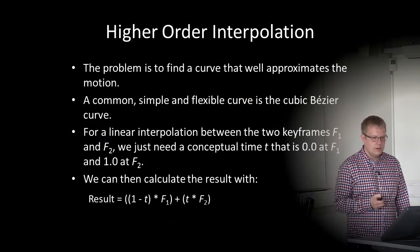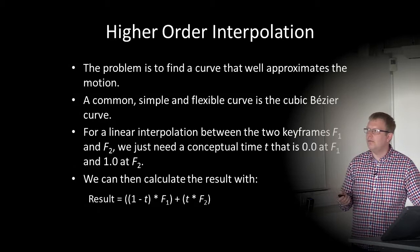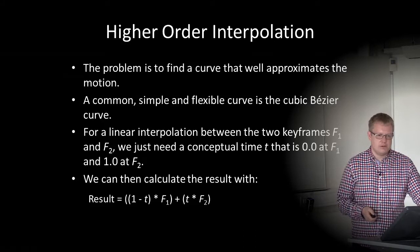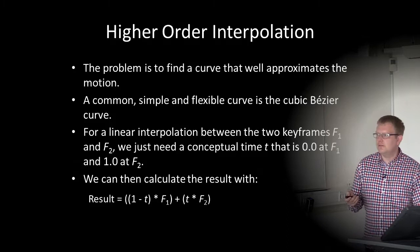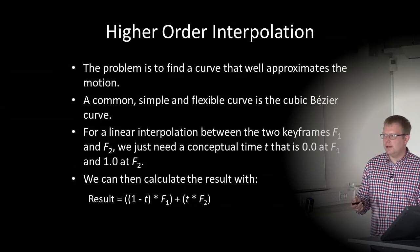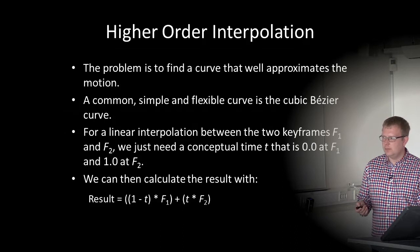If we use higher-order interpolation between keyframes where we define some curve, the animation looks more natural and only requires three keyframes instead of six, producing better results. A common, simple, and very flexible curve is the cubic Bézier curve. For a linear interpolation between two keyframes F1 and F2, we use a conceptual time that is zero at F1 and one at F2. The result is calculated using: (1 - T) × F1 + T × F2.